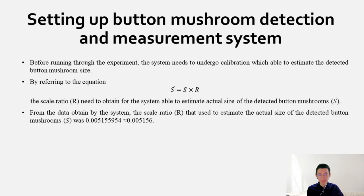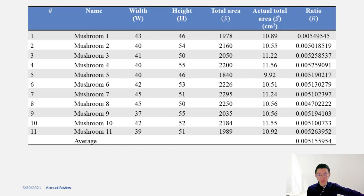Before running the experiment, the system needs to undergo calibration to estimate the detected button mushroom size. By referring to the equation, the scale ratio R needs to be obtained for the system to estimate actual size of the detected button mushroom. From the data obtained by the system, the scale ratio used to estimate actual size is 0.005156.